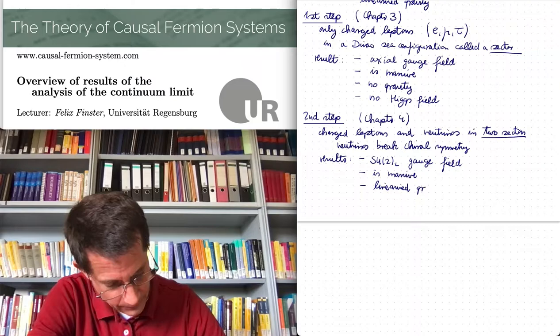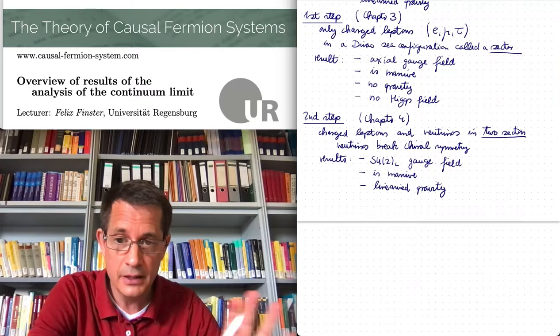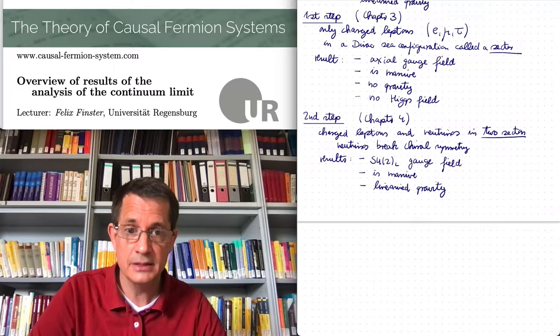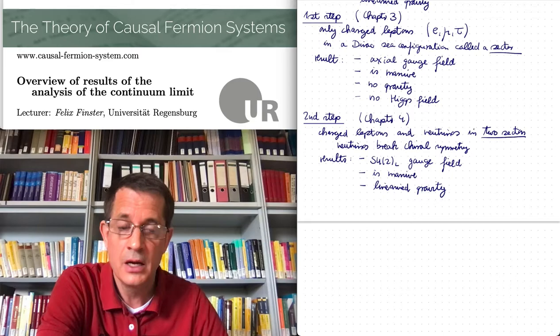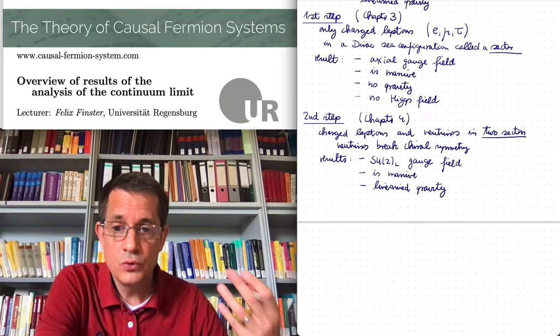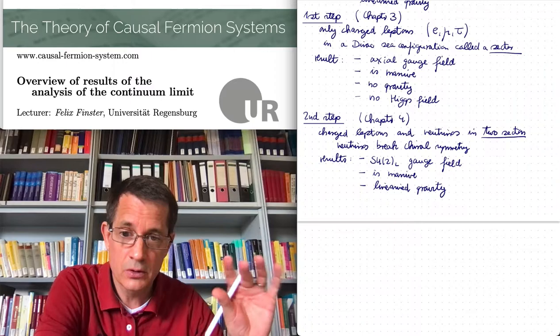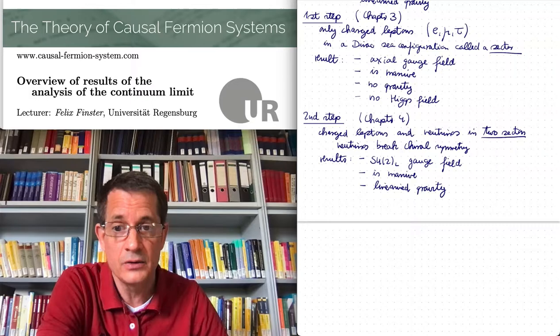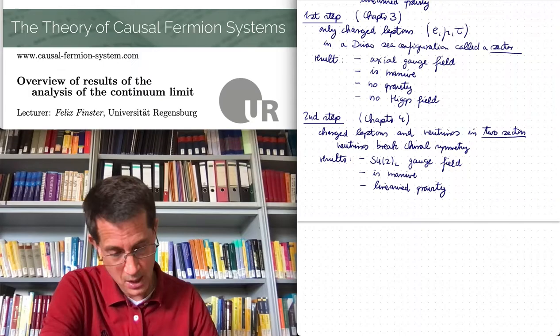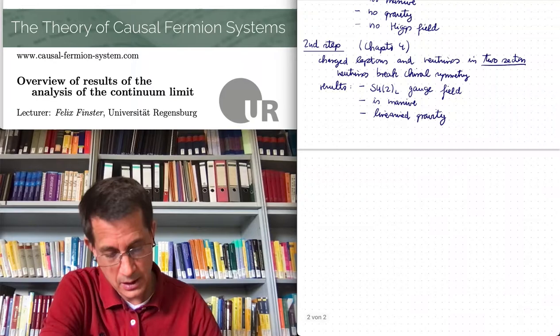Gravity is explained in a separate video, which is why I don't say much about it here. We get the Einstein equations up to possibly higher-order corrections in the curvature tensor, and we also know from the scaling behavior how these correction terms would scale.